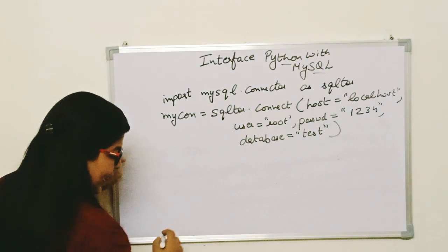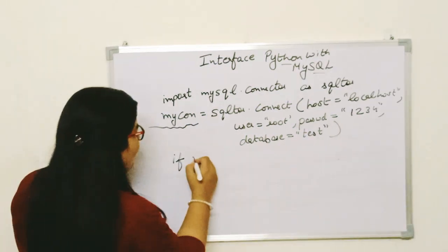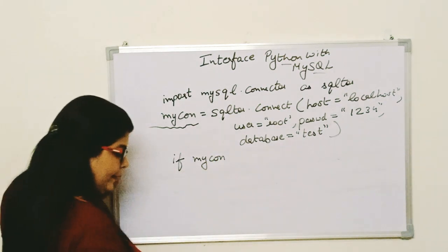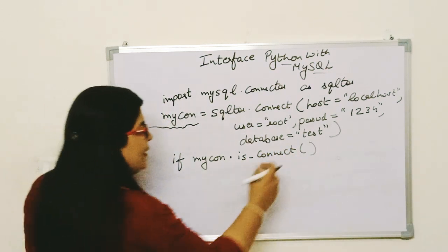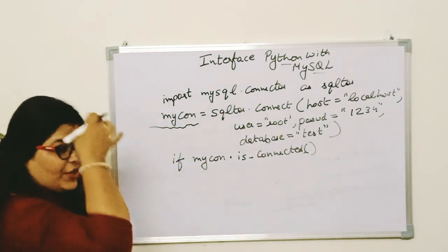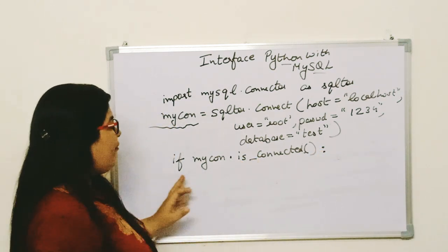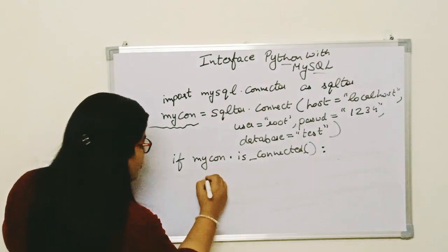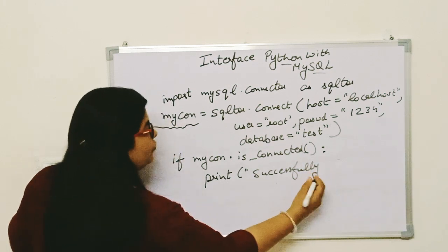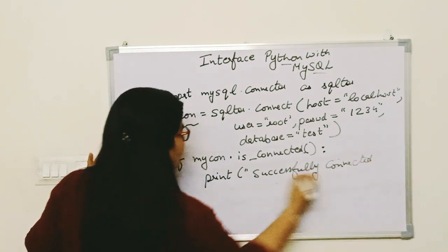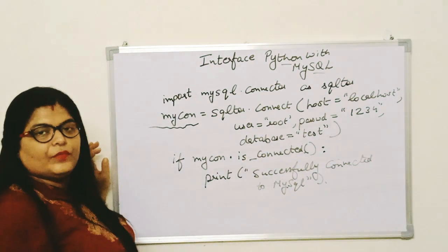Now if you want to check whether your connection is ready to work or not, you can use: if mycon.is_connected(). Here 'is_connected' is a function — written as is_underscore_connected. So you write: if mycon.is_connected():